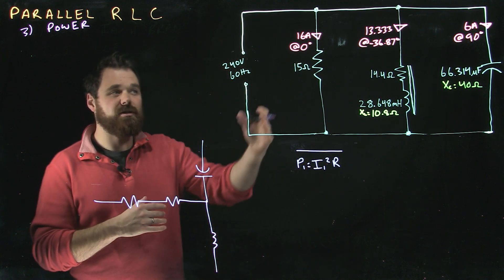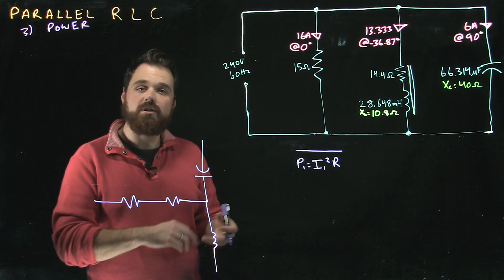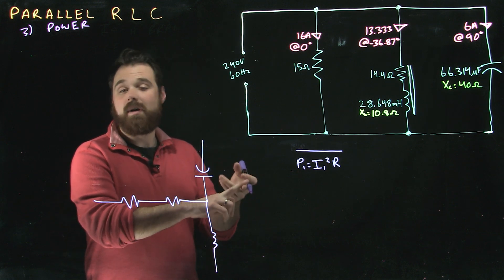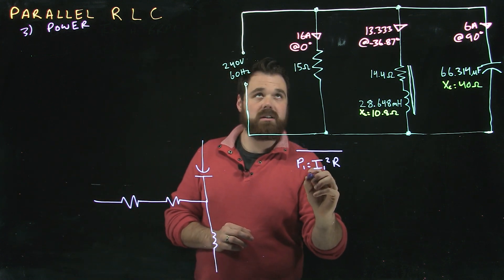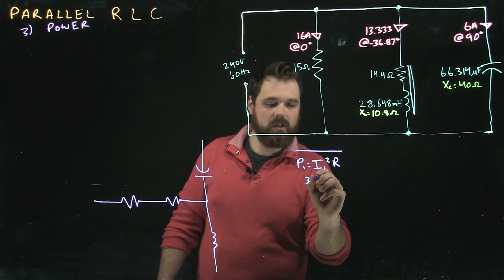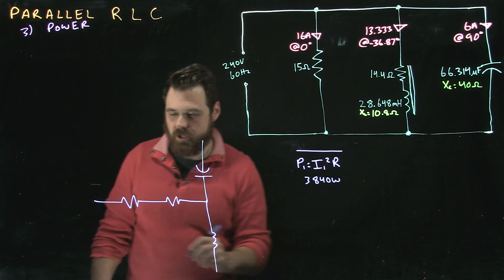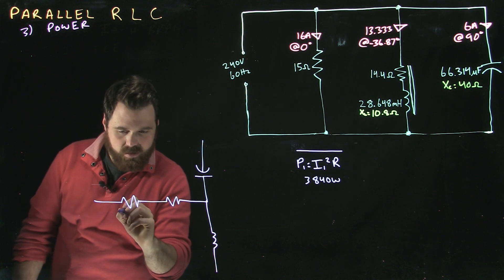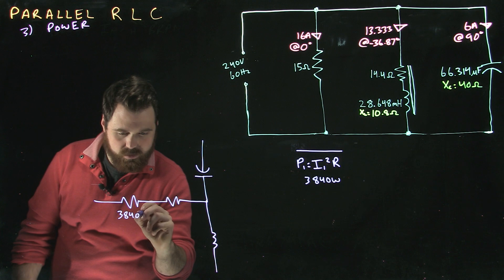Now in this branch, because it's a pure resistor, you could use I1 times V1, or you could use V1 squared divided by R, but this is my favorite formula, so I'm going to use that. In this case I get 3840 watts. So I'm going to actually put that information over here. 3840 watts.